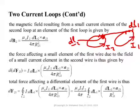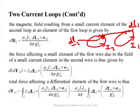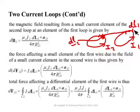To get the force affecting that small differential element of the first wire due to the entire second loop, we integrate this term over the second loop. This gives us the force on that differential element of the first loop due to the magnetic field of the whole second loop. Taking the constants I1 and I2 out, we get an expression for the force on one differential element of the first loop, where all distances are measured from every element of the second loop to that one element.